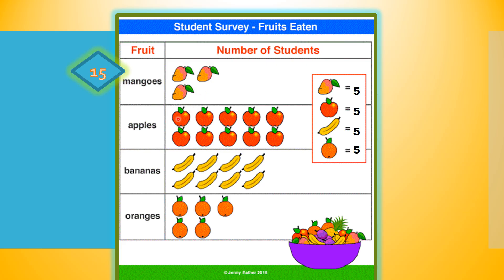Let's count the apples by counting in fives. Five, 10, 15, 20, 25, 30, 35, 40, 45, 50. 50 apples have been eaten by this group of students.